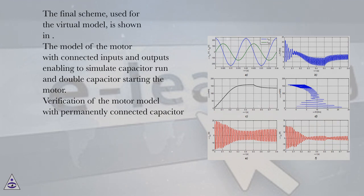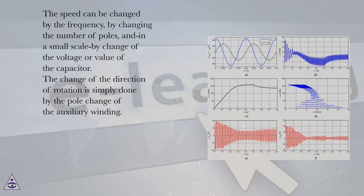Verification of the motor model with permanently connected capacitor. The speed can be changed by the frequency, by changing the number of poles, and in a small scale by change of the voltage or value of the capacitor. The change of the direction of rotation is simply done by the pole change of the auxiliary winding.